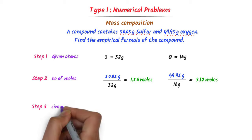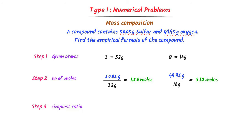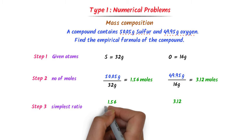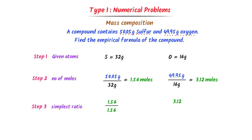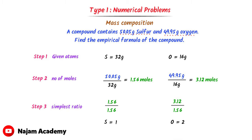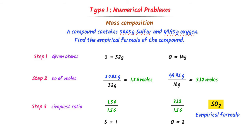In the third step, I find the simplest ratio between atoms. I rewrite the number of moles and select the smallest number, which is 1.56. I divide 1.56 by 1.56 and 3.12 by 1.56. After calculation, I get 1 and 2. The ratio of sulfur is 1 and that of oxygen is 2, so the empirical formula is S1O2. Using these three steps, we can easily calculate the empirical formula of any compound.